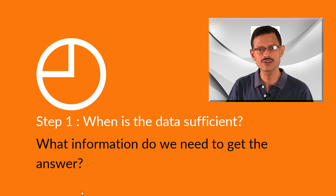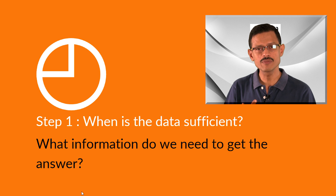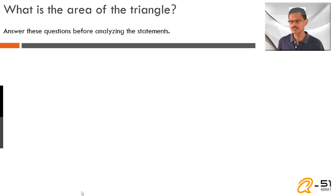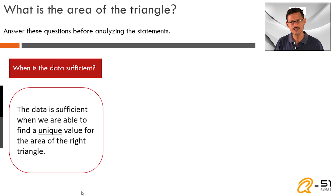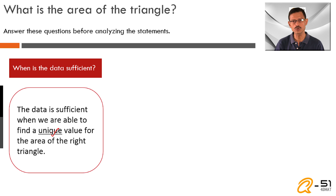We're going to look for two things: we're going to get clarity on when is the data sufficient, and we're also going to look at what information is given and what we need to watch out for. The data is sufficient if I'm able to come up with a unique answer for the area — if I'm able to say the area of this triangle is a specific number and that's the only answer. I cannot have more than one possibility. The key word here is unique.